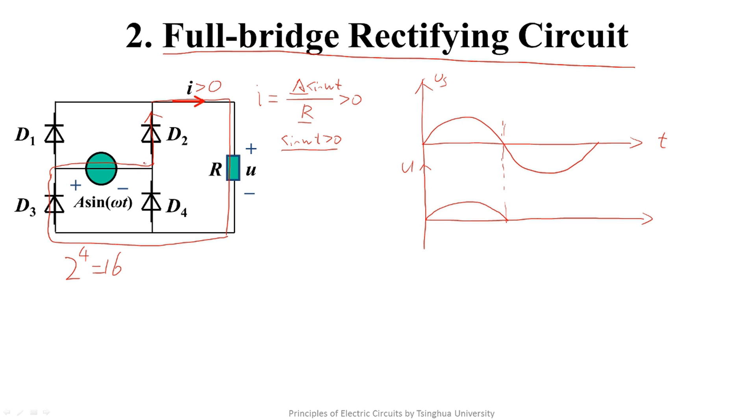Let's look at it. Now the load connects to both ends of the source reversely. So I equals minus A sin omega t over R is greater than zero, and its condition is sin omega t is smaller than zero.